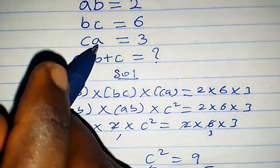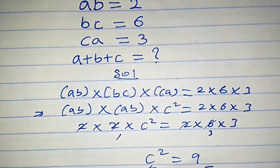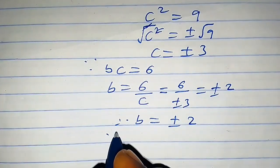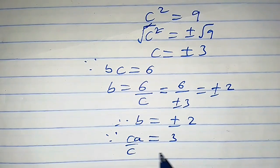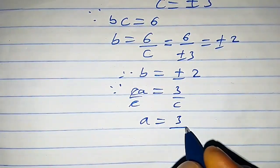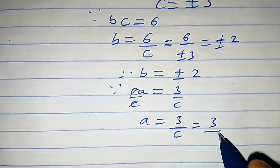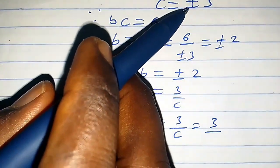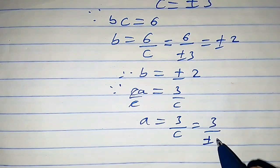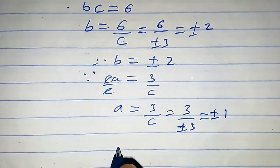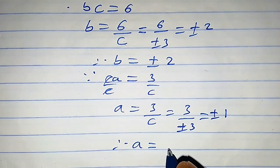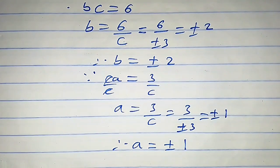To determine a, we use ca equals 3. Dividing both sides by c gives a equals 3 over c, which is 3 over plus or minus 3, so a equals plus or minus 1.